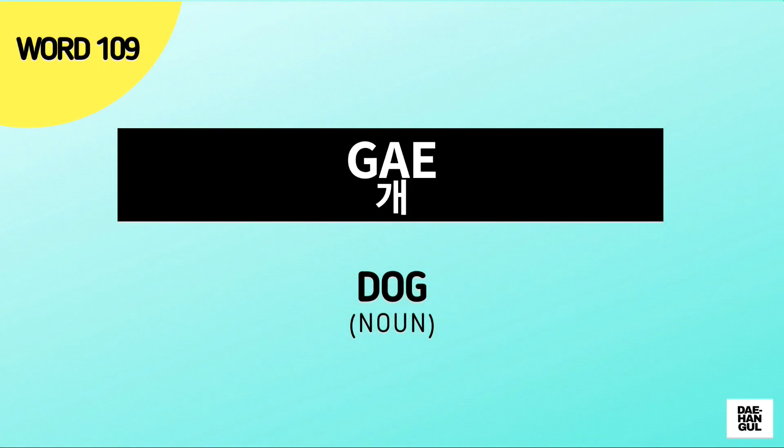Next word is ge. And this is a Korean term for dog. Ge means dog.